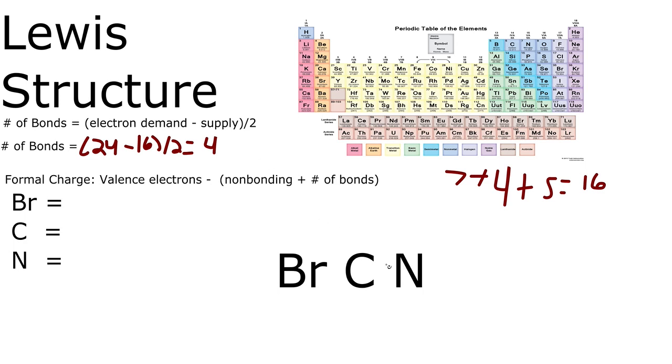Now I know that nitrogen likes to form triple bonds. So we're going to do that first and leave our last bond between the bromine and the carbon. So 1, 2, 3, 4, and 4 bonds.